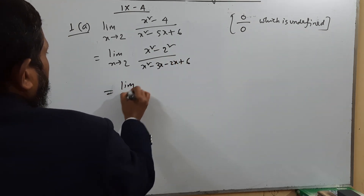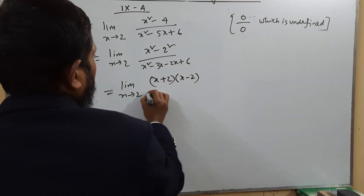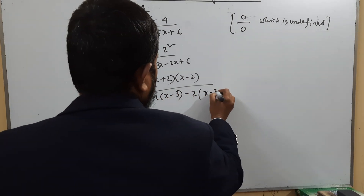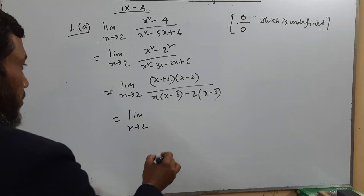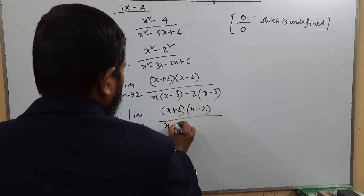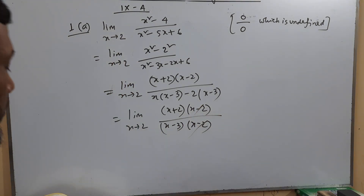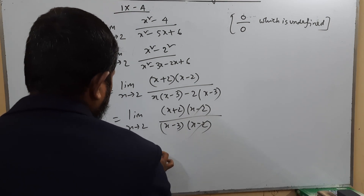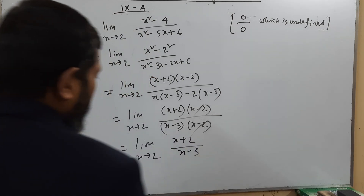We factor the expression: limit x tends to 2 of [(x + 2)(x − 2)] / [(x − 2)(x − 3)]. We cancel the common factor (x − 2), giving us limit x tends to 2 of (x + 2) / (x − 3).